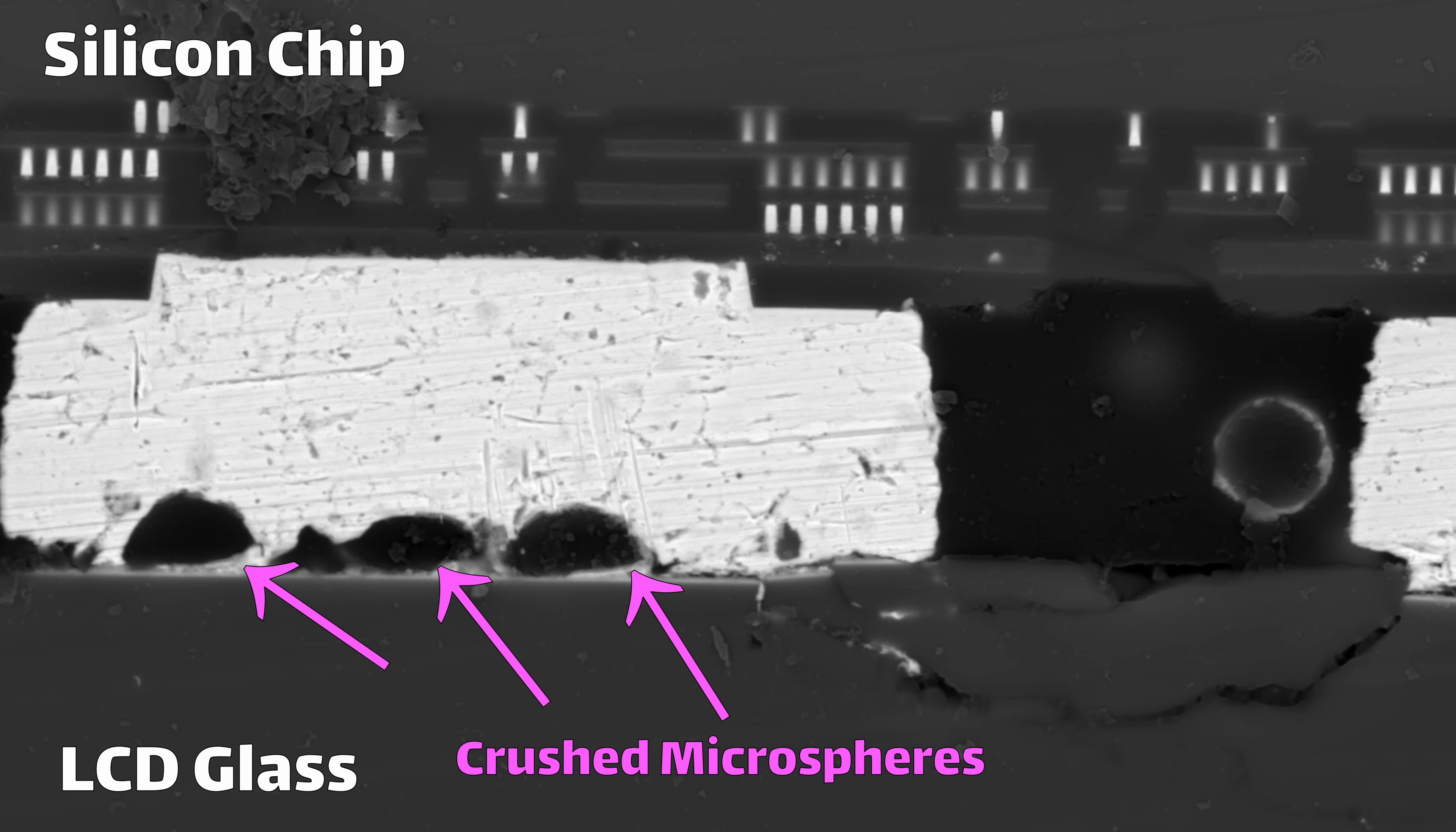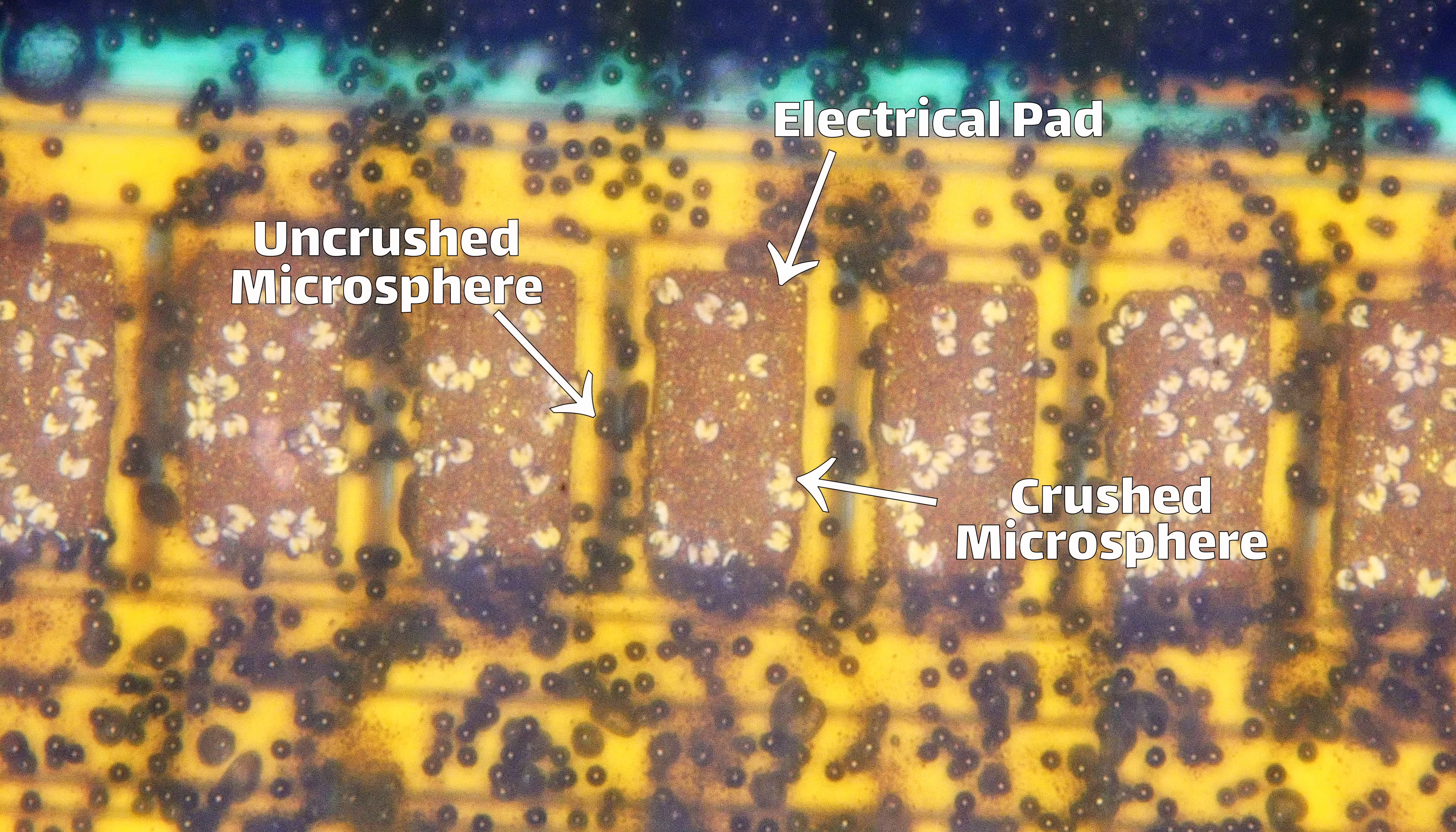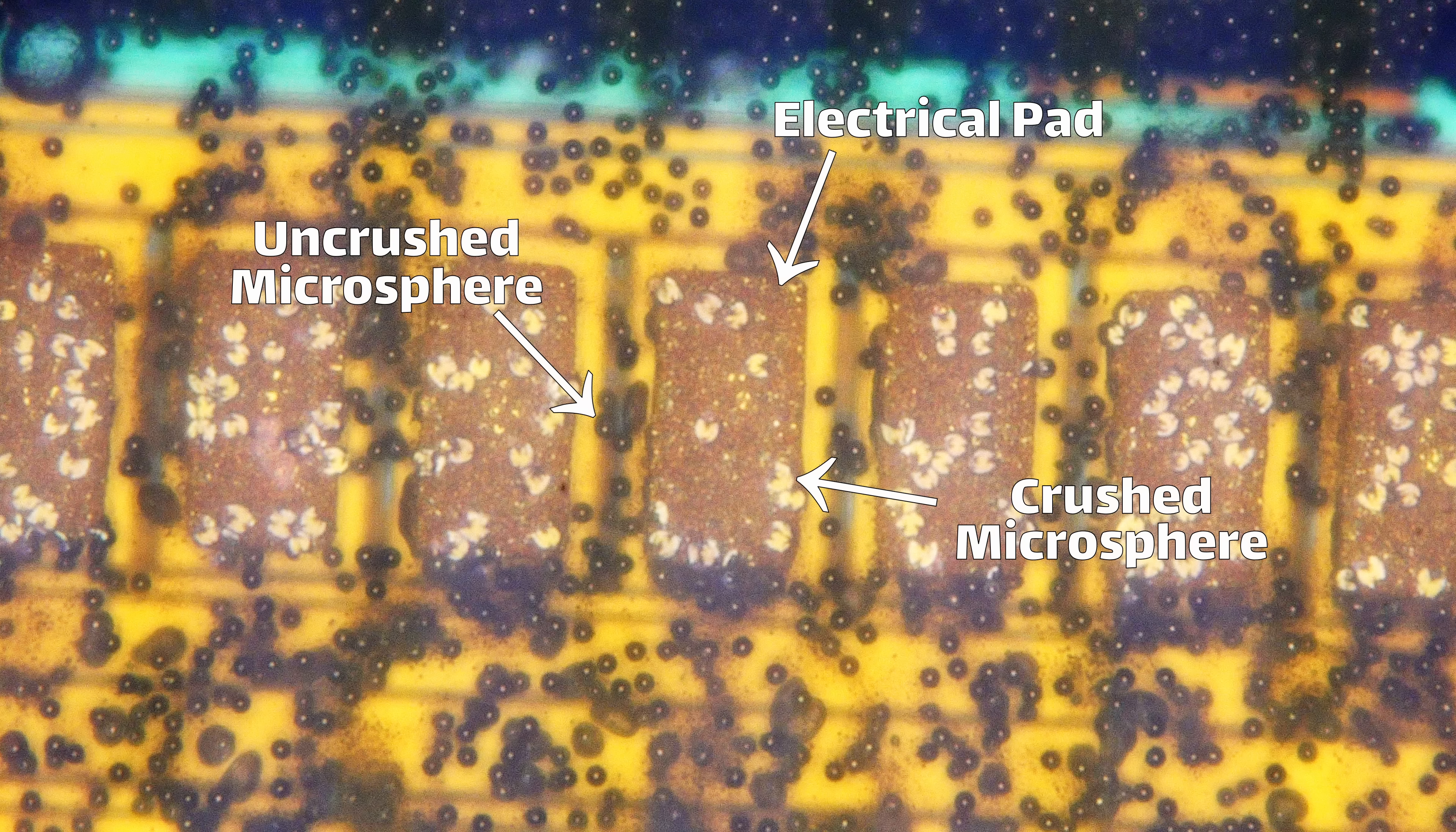From the optical microscope, we can see that there are only a few microspheres that bridge each connection to the pad, which is actually pretty remarkable. And all the rest of them that look perfectly circular are isolated and non-conducting.